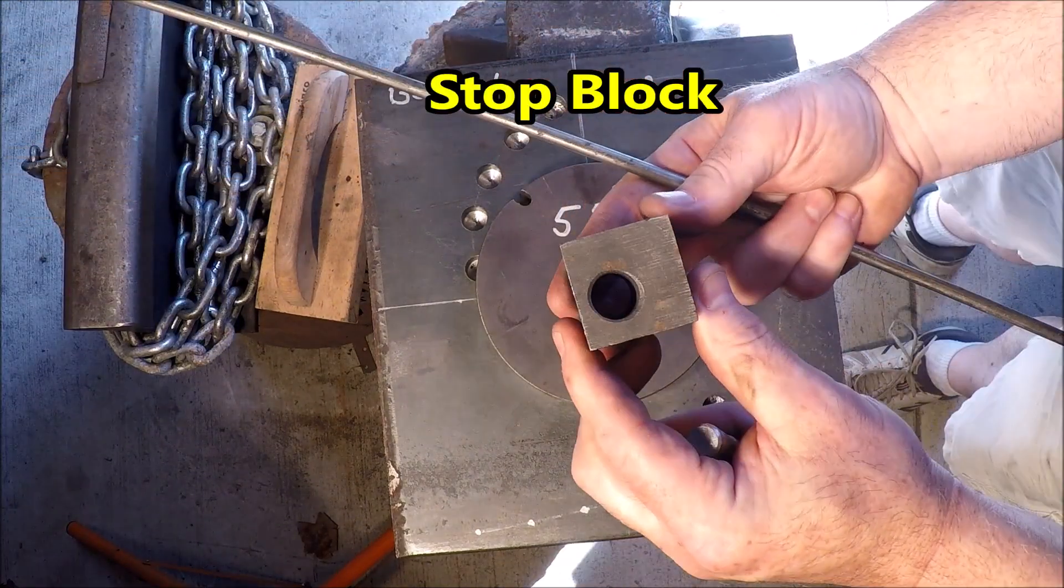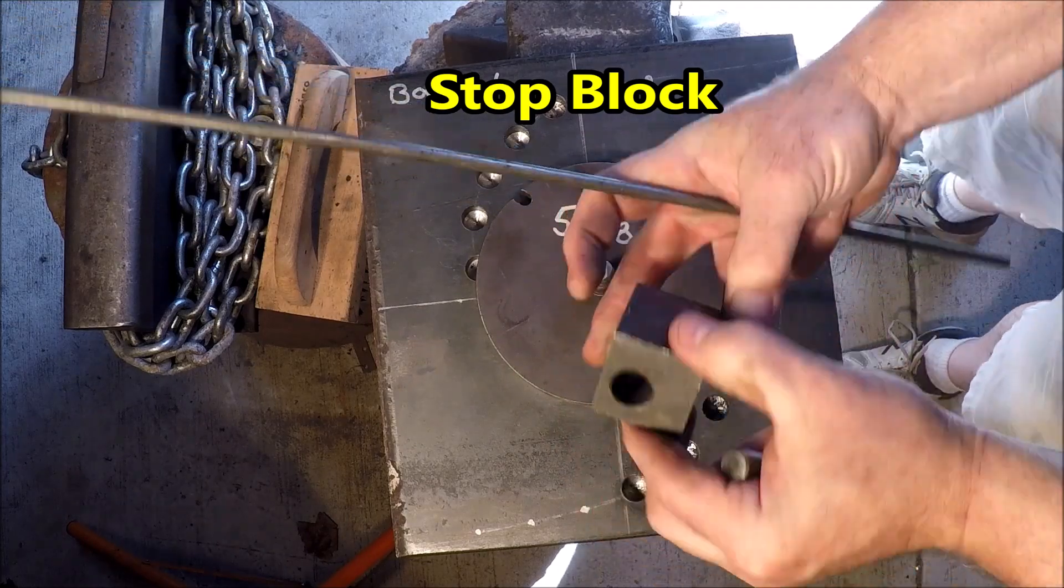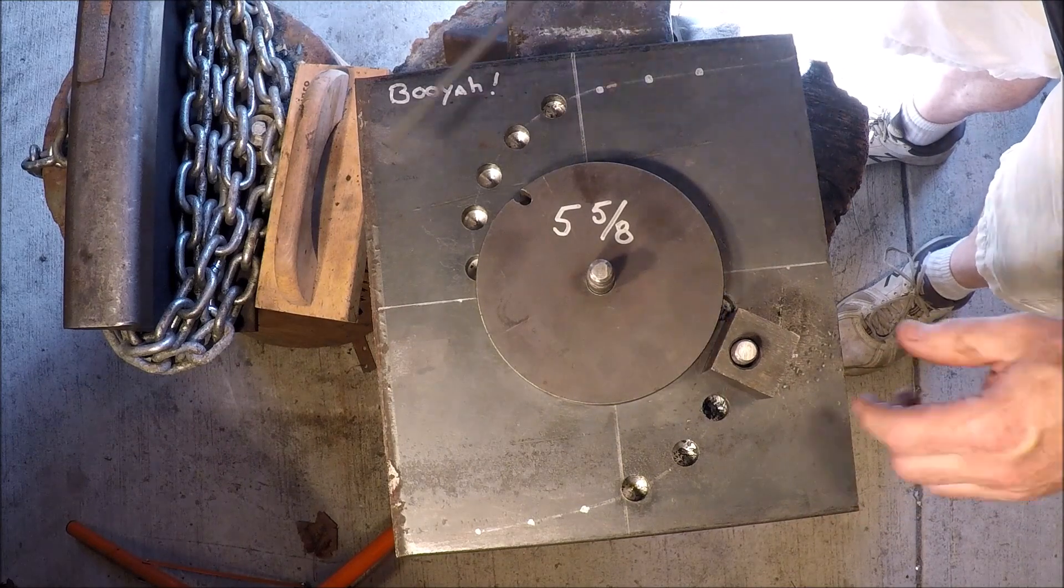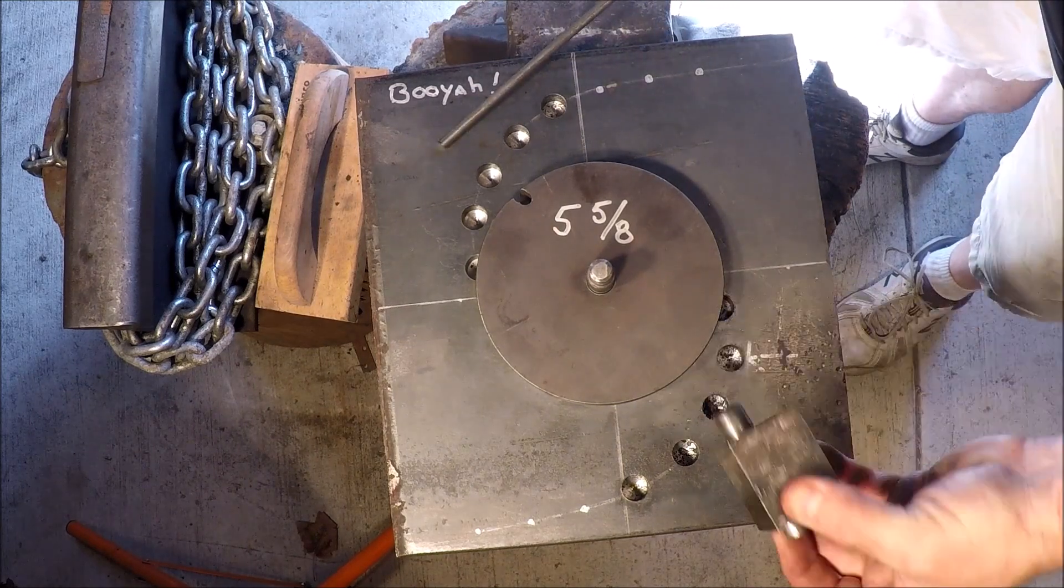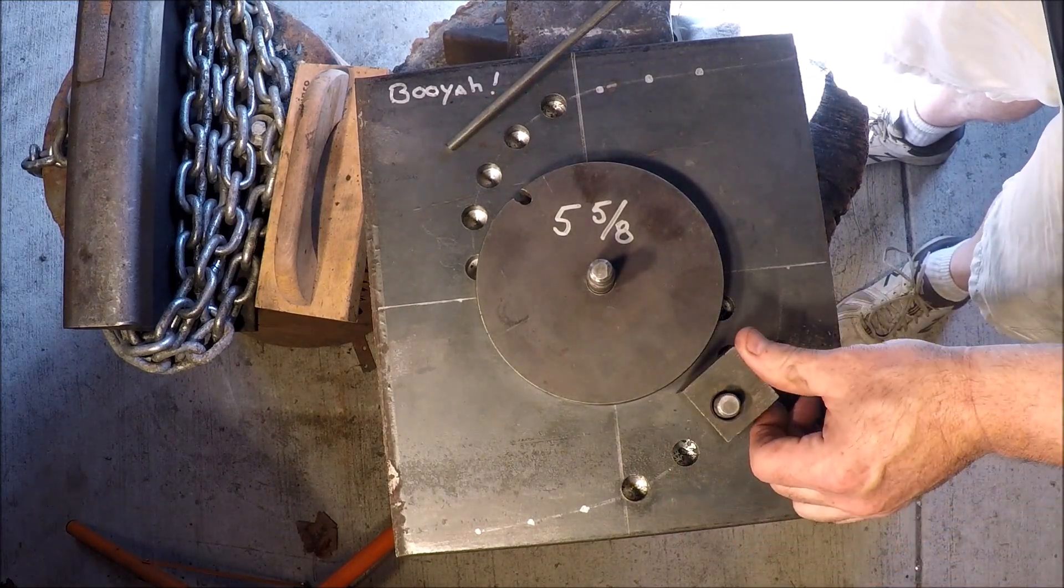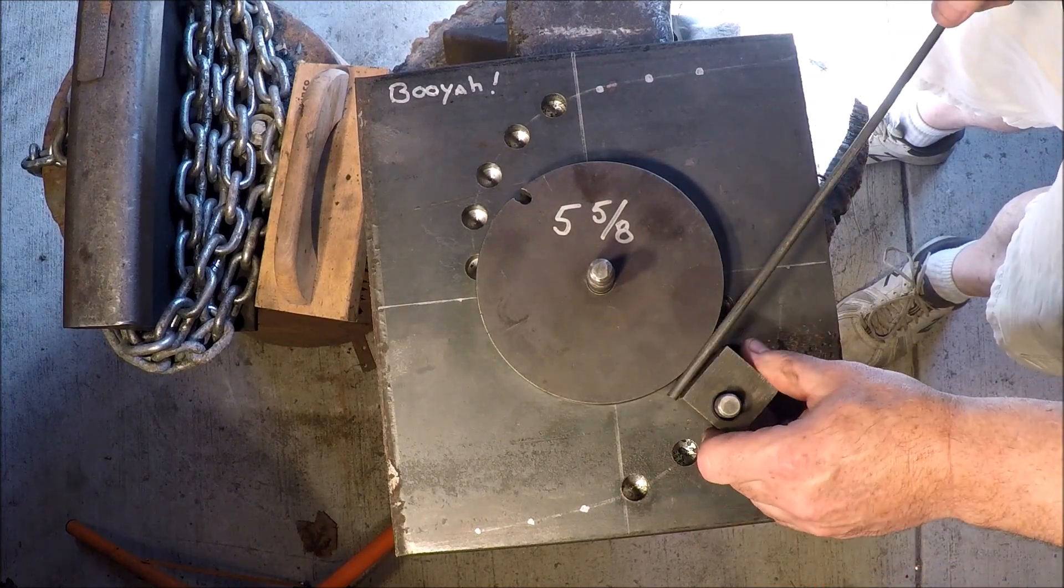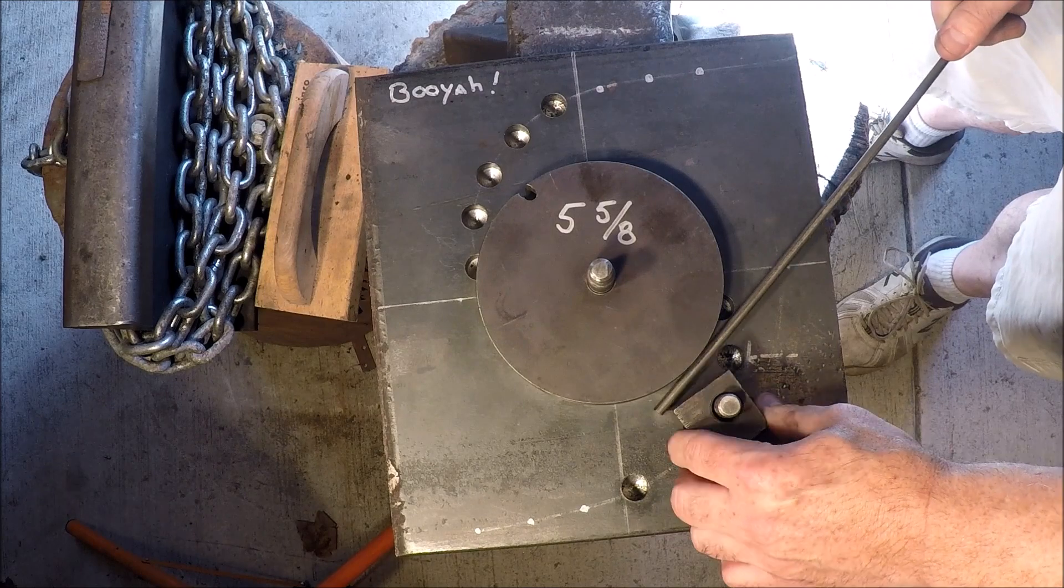Sometimes an alternative is to use a stop block. It's got four different sides and sizes to choose from, but sometimes that doesn't work either. You're trying, you know, sort of trial and error to find the right hole and see if you can find one that actually fits. But in this case I couldn't - it was either too tight or too loose - and so I just ended up using the stock.